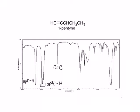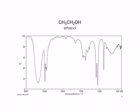Now let's look at the IR spectrum for ethanol. Ethanol contains the OH functionality, and this stretch is very obvious in the IR spectrum at about 3200 wavenumbers. The SP3 carbon-hydrogen stretching is also still visible.